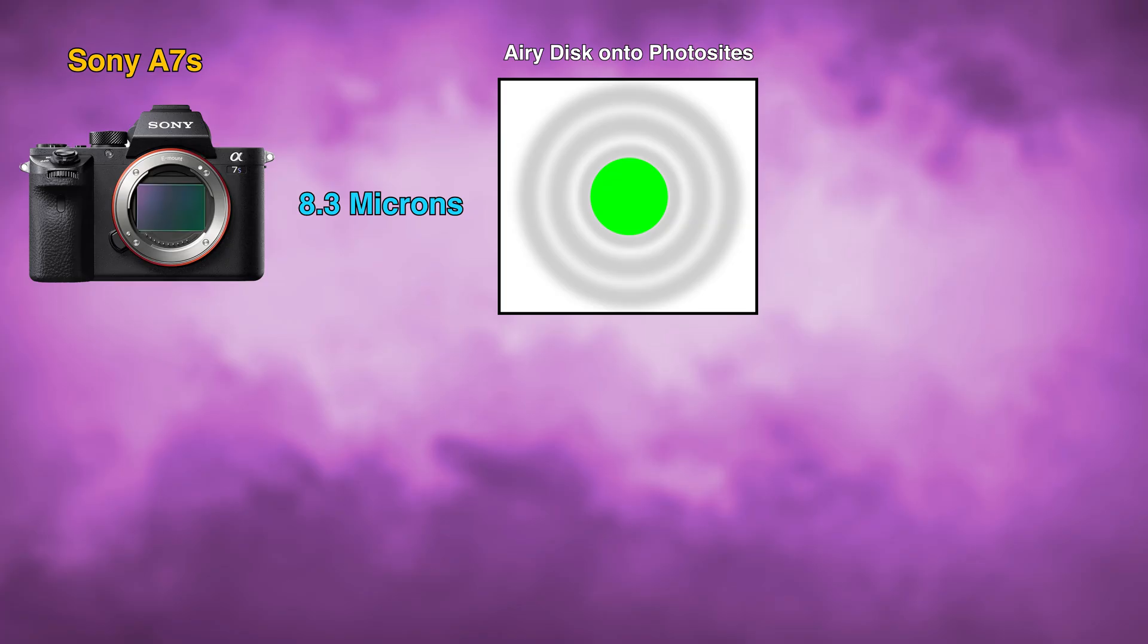The A7S has a very wide pixel pitch, 8.3 microns, and if we were to take that to estimate the sides, there's a lot of real estate for one single photo site on the A7S. A green point of light lands within the photo site, including the rings and the halo, and that is interpreted as a green pixel.